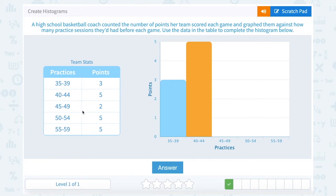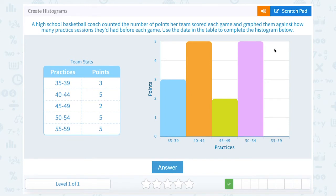For 45 to 49 practice sessions they scored two points. And for 50 to 54 they scored five. For 55 to 59 they also scored five.